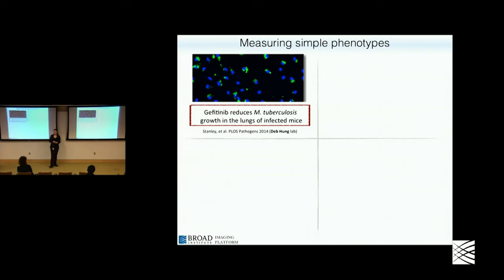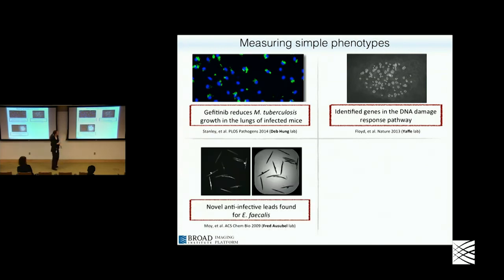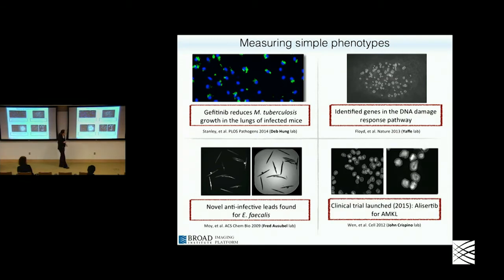Some examples of this kind of analysis where you're measuring a simple phenotype: with the HUM lab we counted green blobs — tuberculosis bacteria infecting macrophages — to identify a drug that reduces the infection rate. In collaboration with the Yaffe lab, we identified genes in the DNA damage response pathway by counting DNA damage speckles within a single nucleus. With the Azebel and Ravkin labs we screened C. elegans worms in a multi-well plate looking for novel anti-infectives. And the AMKL leukemia study already described. In each case, the biologists knew exactly what they wanted to measure.